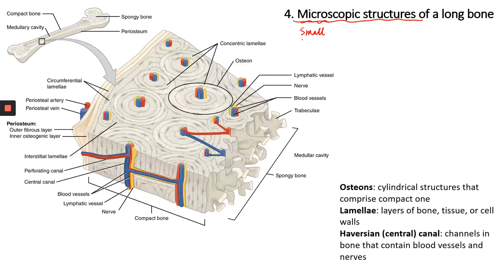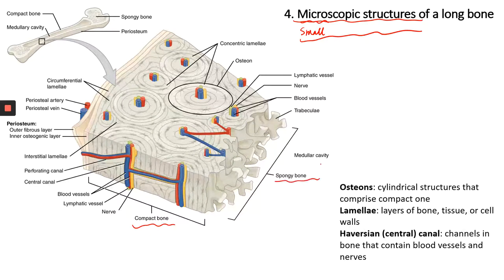Microscopic structures are very small, so you can't really see them with your naked eyes or without any instrument. If you remember, last time we talked about two types of osseous tissues: compact bone and spongy bone. Compact bone is usually the external layer, very dense, smooth and solid, and spongy bone is internal to that, with a lot of open space filled with bone marrow. We are going to mainly look at the microscopic structures of a compact bone.